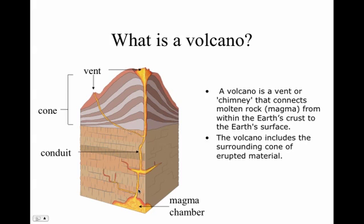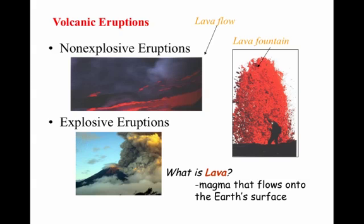Sometimes cracks occur in the crust to allow the magma to get closer to the surface. We call these conduits, and then the point that it hits the top or surface of the earth is called the vent. Volcanic eruptions can come in two forms: they can be really explosive and often dangerous, and some are non-explosive but still dangerous. Lava is basically molten earth that reaches the surface.